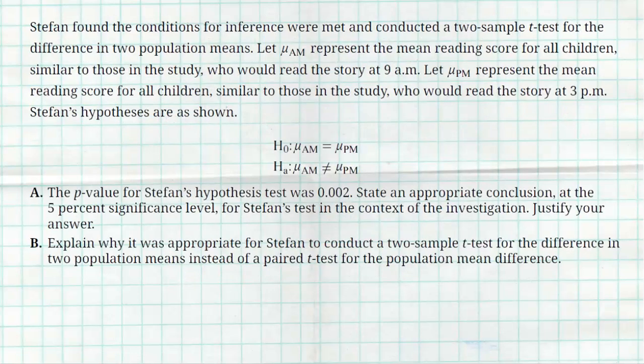Here are the results of his data — both sample sizes are 50. There's the mean reading score, which is the number of questions they got right, and the standard deviation, same for 3 p.m. The afternoon did seem to produce slightly higher scores, but you never know if that actually means anything. Stefan is going to do a two-sample t-test because he's working with means and has two different samples. The null hypothesis is that there's no difference — mu_am equals mu_pm — and the alternative is that there is a difference.